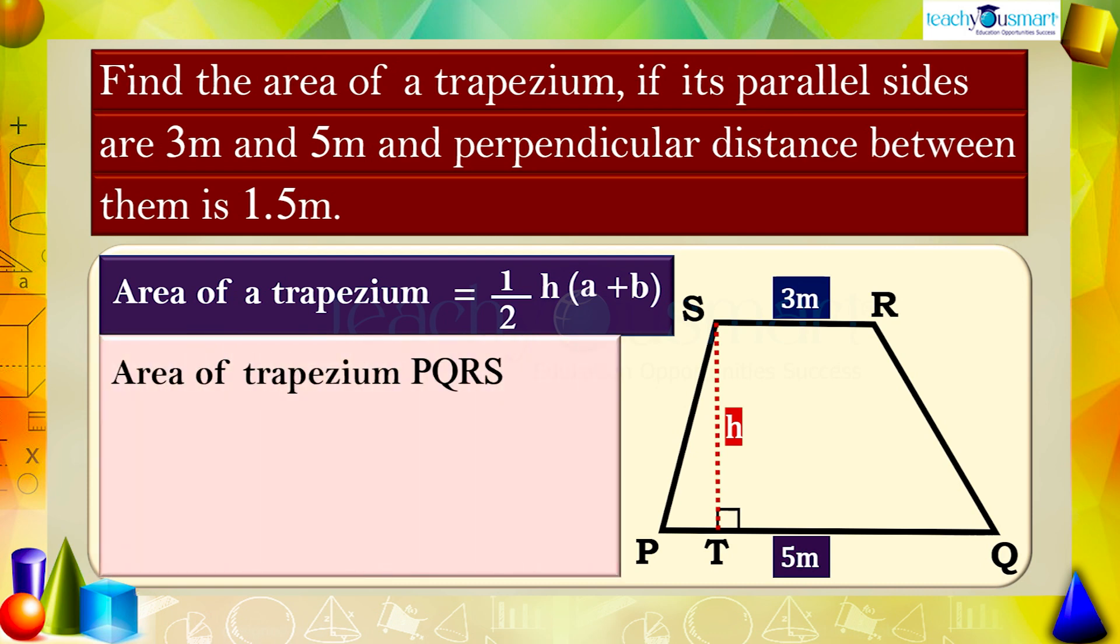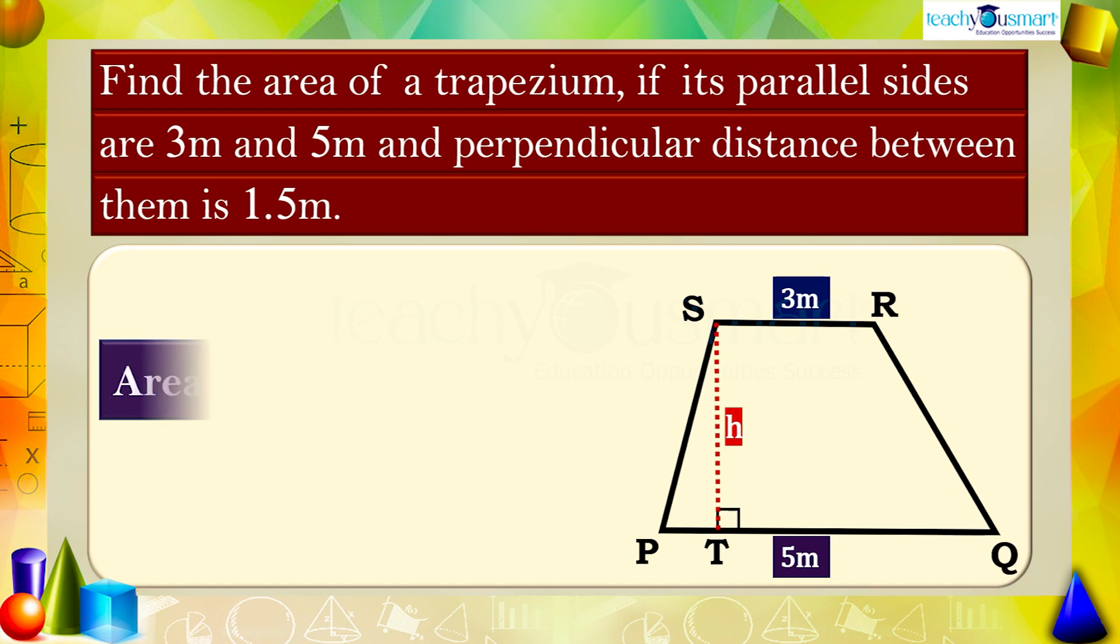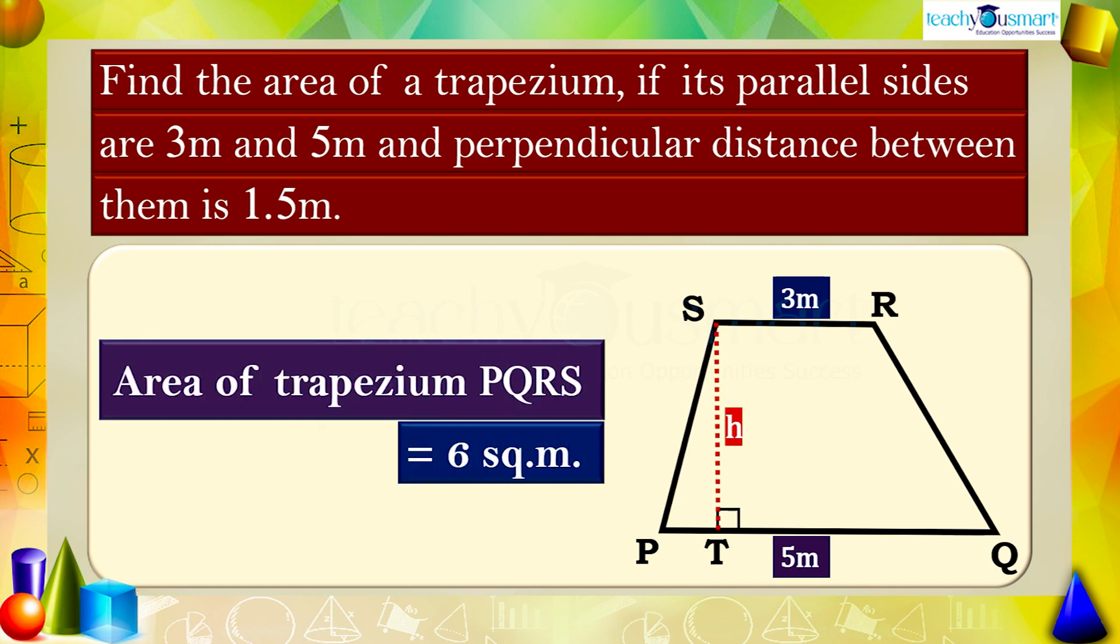Therefore, the area of trapezium PQRS equals 1 by 2 multiplied by 1.5 multiplied by 5 plus 3, equals 1 by 2 multiplied by 1.5 multiplied by 8, equals 6 square meters. That is, area of trapezium PQRS equals 6 square meters.